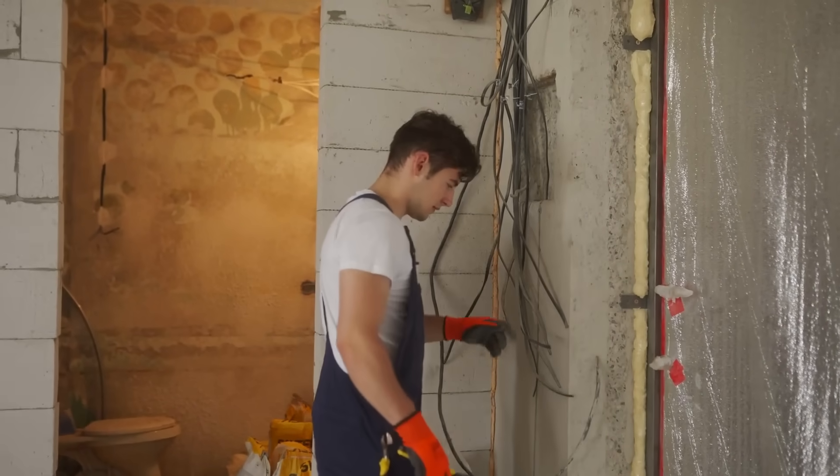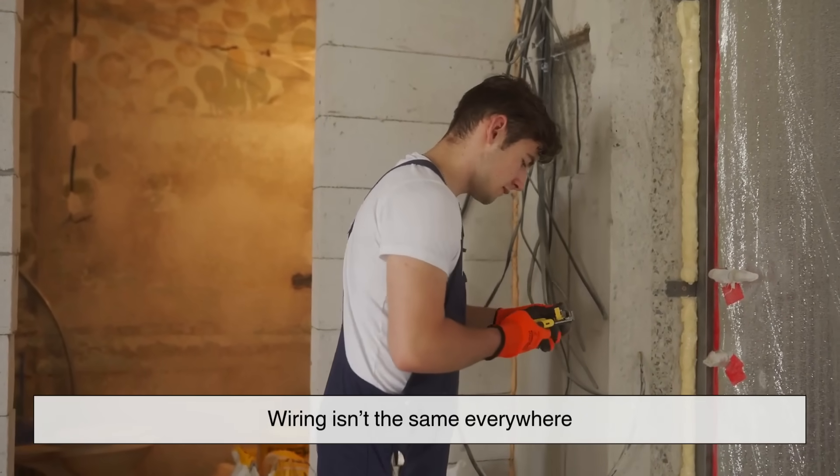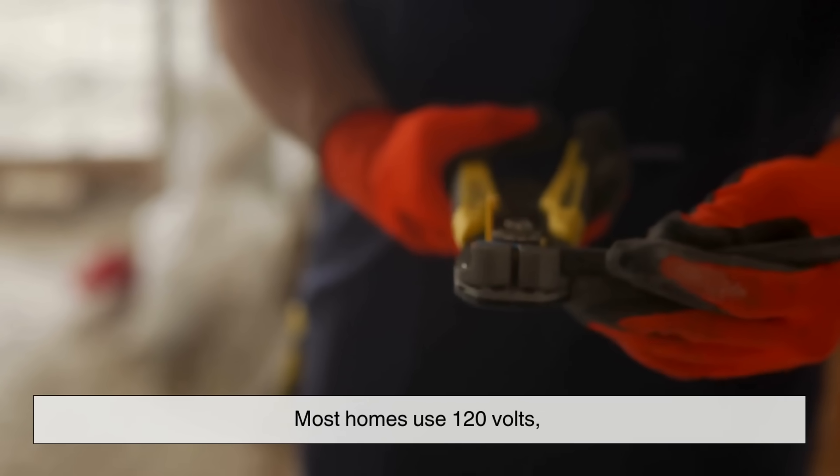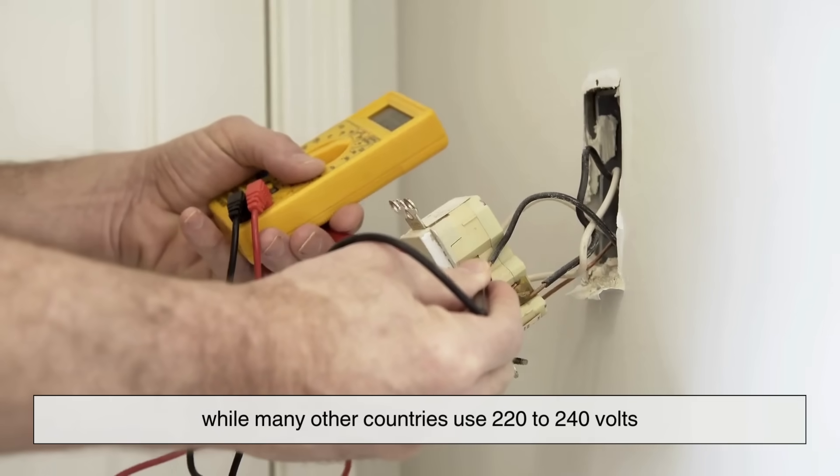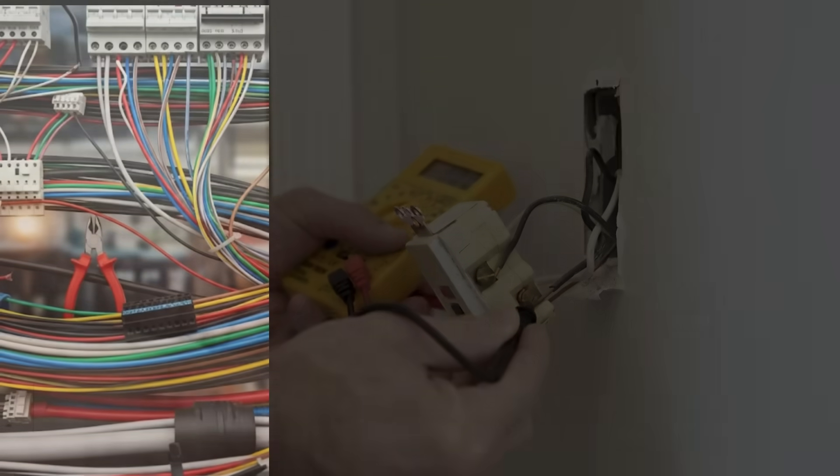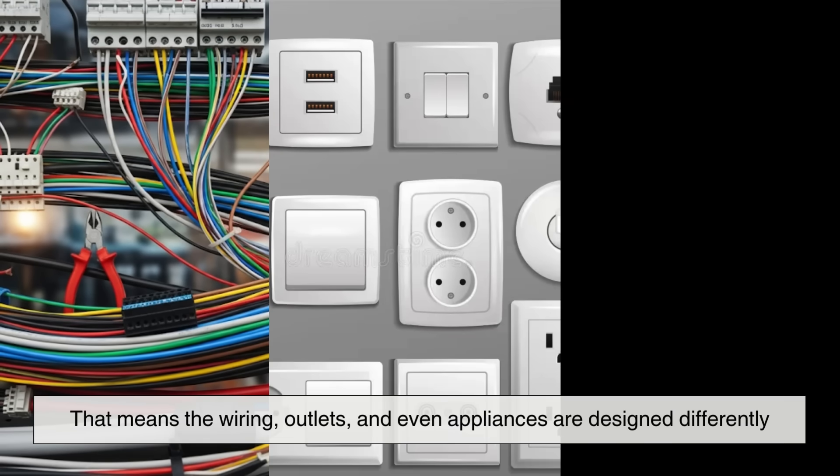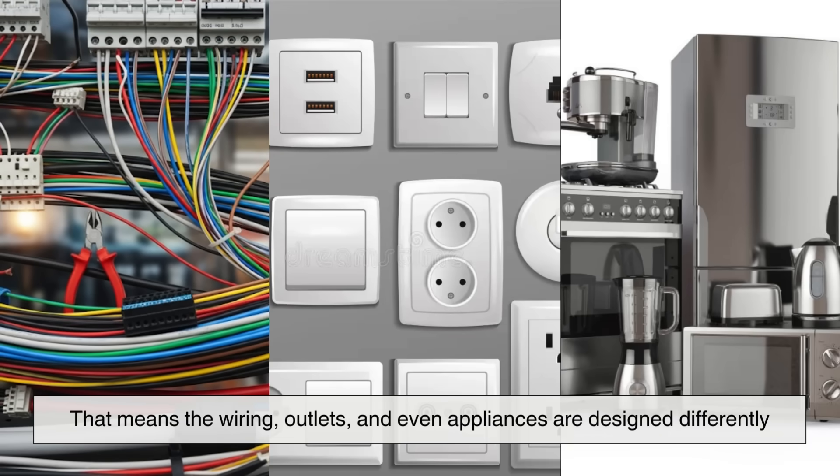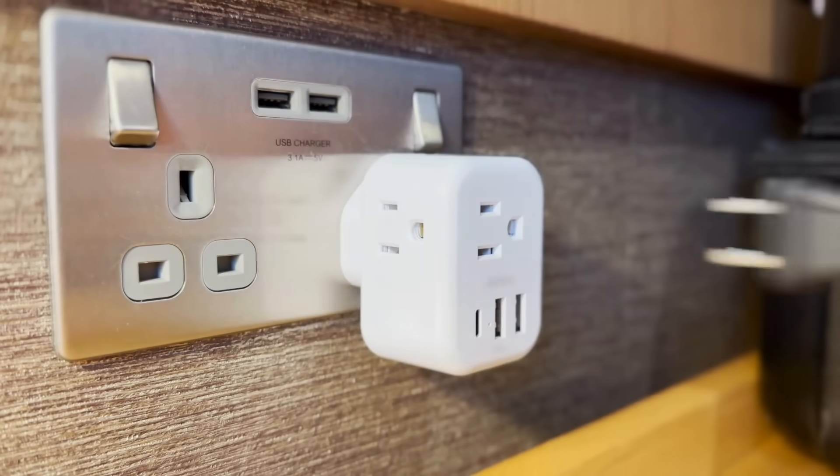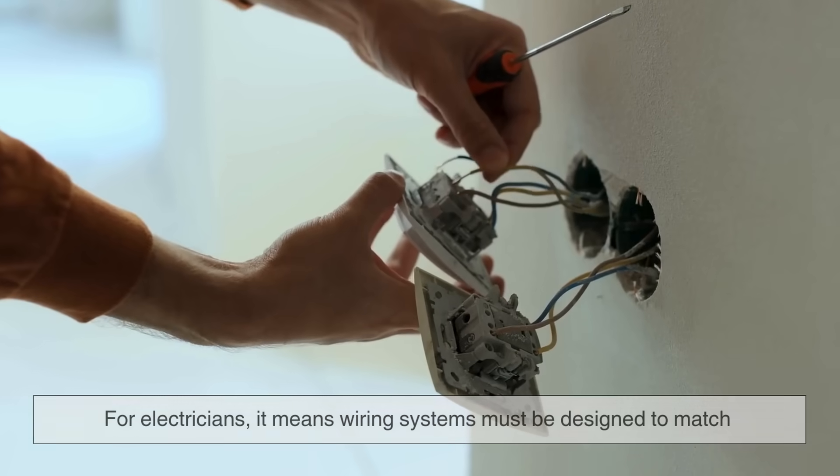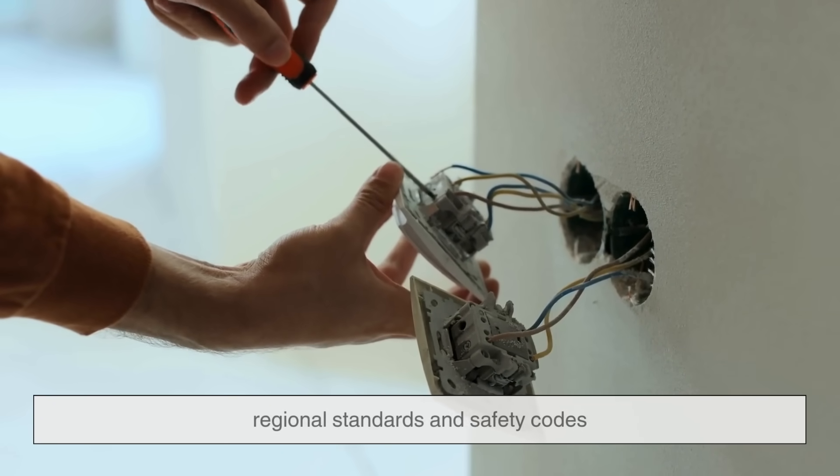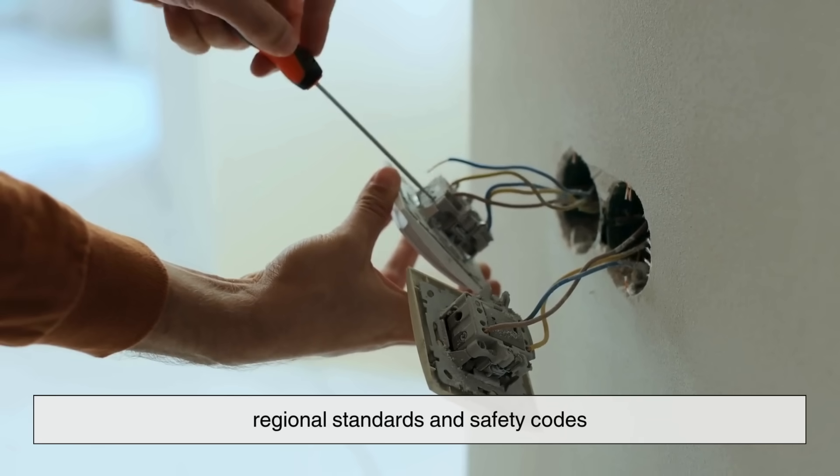It's also interesting to note that wiring isn't the same everywhere. In North America, most homes use 120 volts, while many other countries use 220 to 240 volts. That means the wiring, outlets, and even appliances are designed differently. Travelers often notice this when they need adapters for their devices. But for electricians, it means wiring systems must be designed to match regional standards and safety codes.